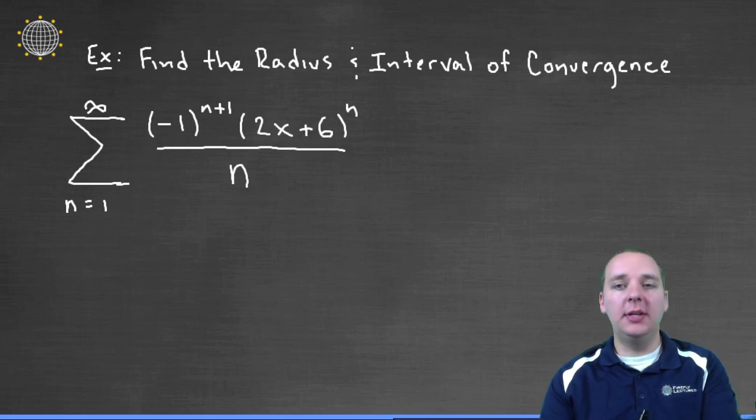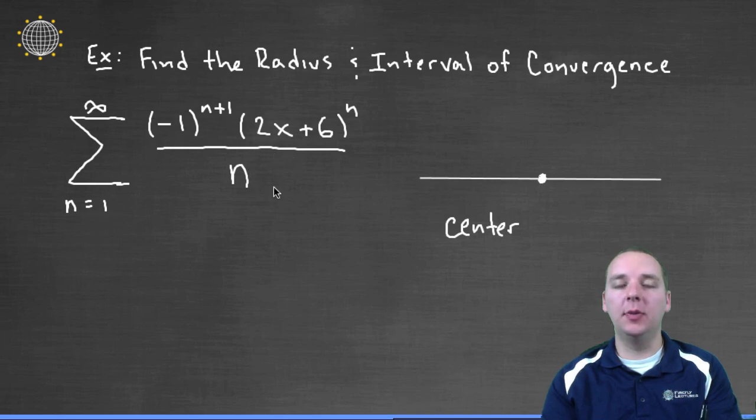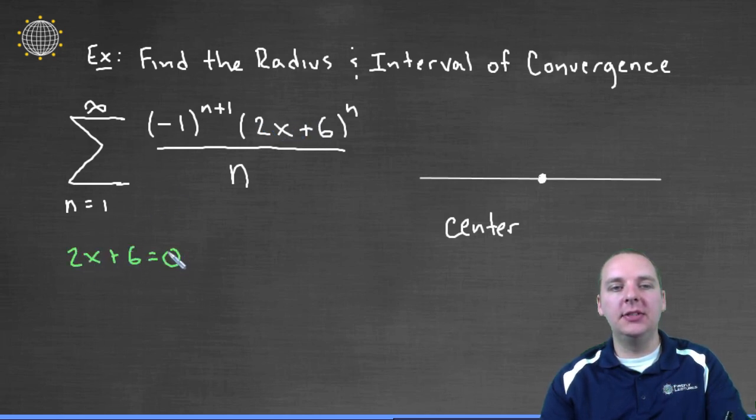The way we typically start these is we have to first determine where the center of the power series is. What I typically like to do is take the inside expression that has the x, in this case the 2x plus 6, and if you set this equal to 0 and solve it, that x value will be the center. So 2x equals negative 6, or x equals negative 3. So this particular power series is centered at negative 3.